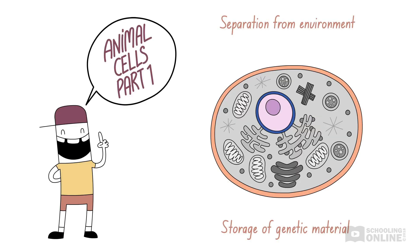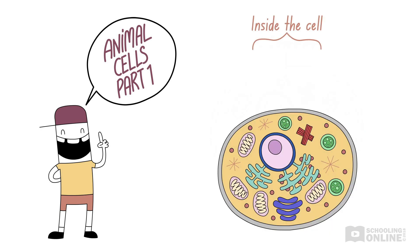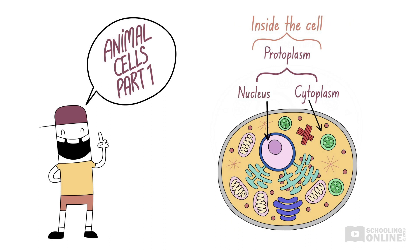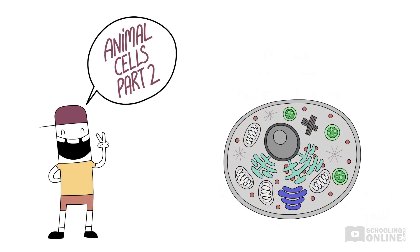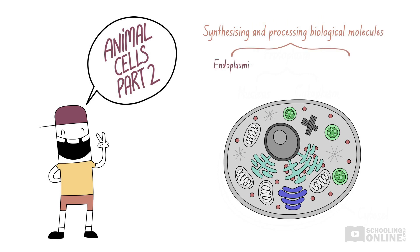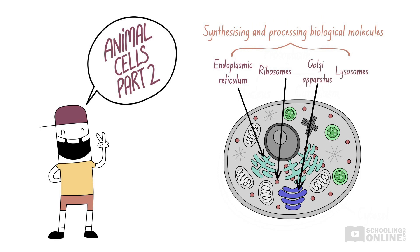In the previous lesson, we covered the protective cell membrane and the nucleus. We also looked at the protoplasm and cytoplasm, which both contain cytosol. If you would like to revise these components, please see our earlier video on animal cells. This lesson will focus on organelles responsible for synthesising and processing biological molecules, including the endoplasmic reticulum, ribosomes, Golgi apparatus and lysosomes.